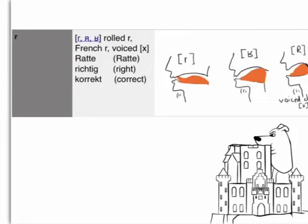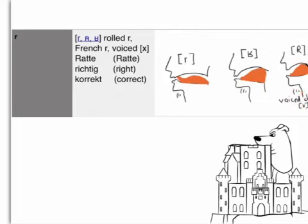There is another one I call the French R, because this is what French has. It's at the very back of your tongue and the front lies flat. If these two R's are too difficult for you, you can take our CH sound and voice it. If you have the CH where the voice is added, it's also a valid R. So you choose, you try, and please be patient.